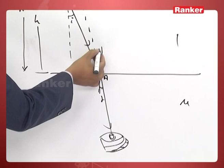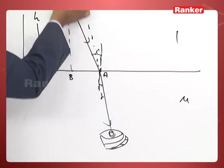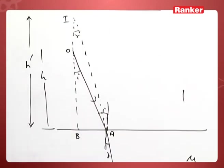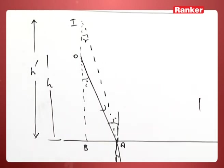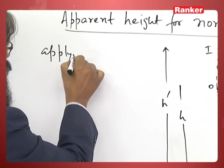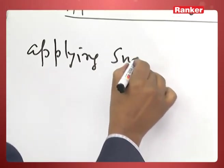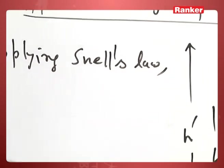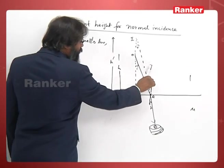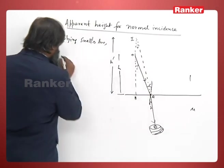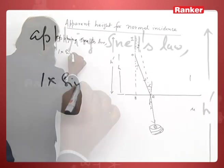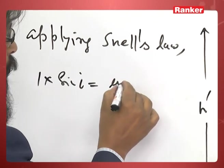So this ray becomes—this angle is r—so this will be this angle r. So applying Snell's law: light is going from here, so 1 × sin i = μ × sin r.